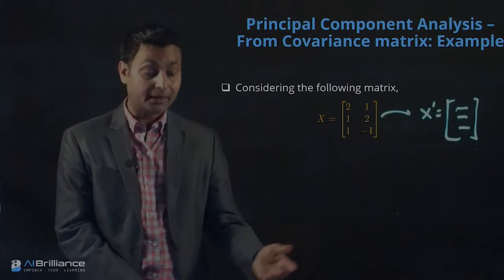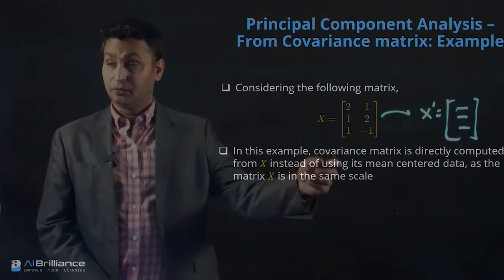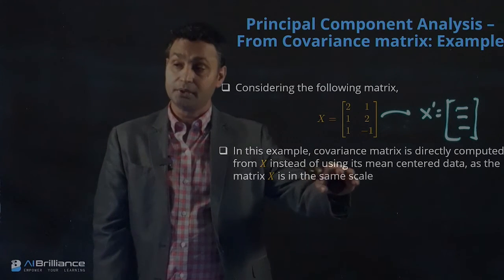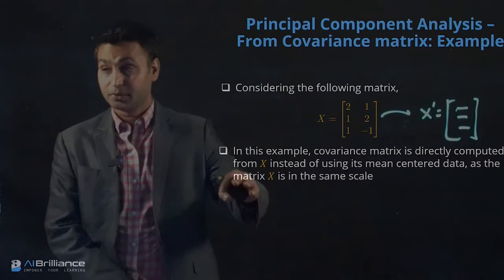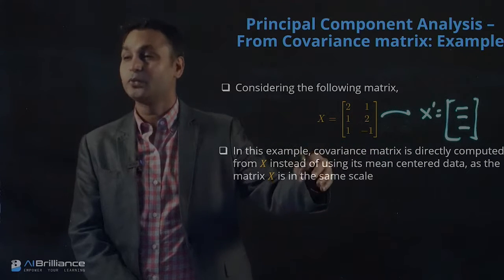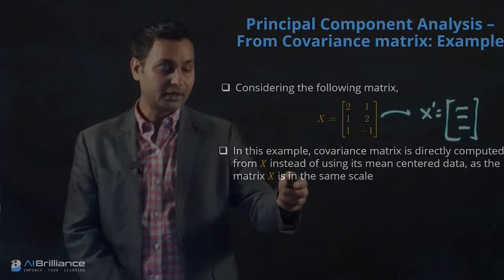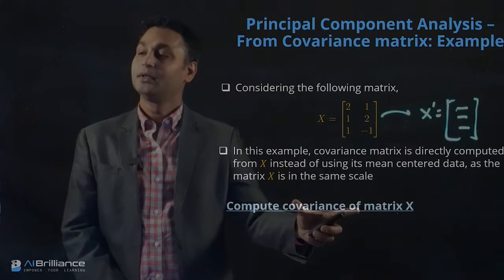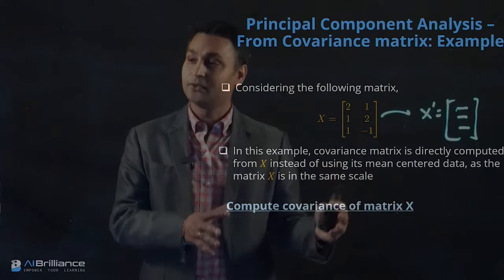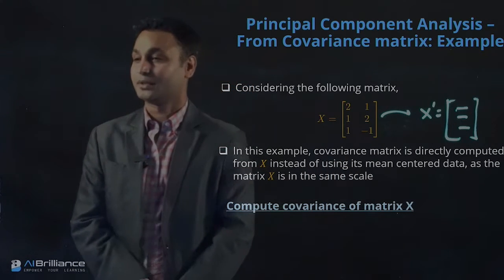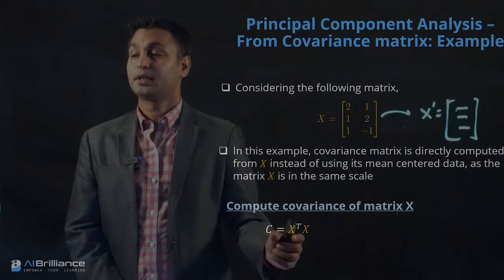The question is how do we do that? Let's see two different approaches. We are directly computing on X instead of using the mean-centered version. You can do the mean-centered approach, but this is a simple matrix and they are on the same scale, so mean centering is not going to help much. So we will move on directly to the computation of the covariance matrix from X. The covariance matrix is X transpose X.